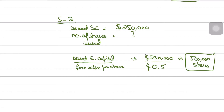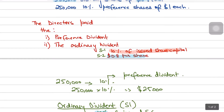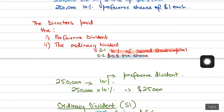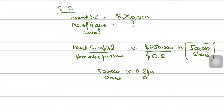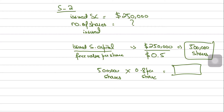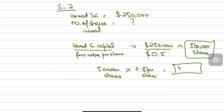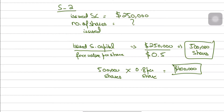Once we know the number of shares issued is 500,000, and the dividend per share is $0.08, we multiply 500,000 by $0.08 to get the ordinary dividend paid to ordinary shareholders, which is $400,000. So in this video we learned two things.